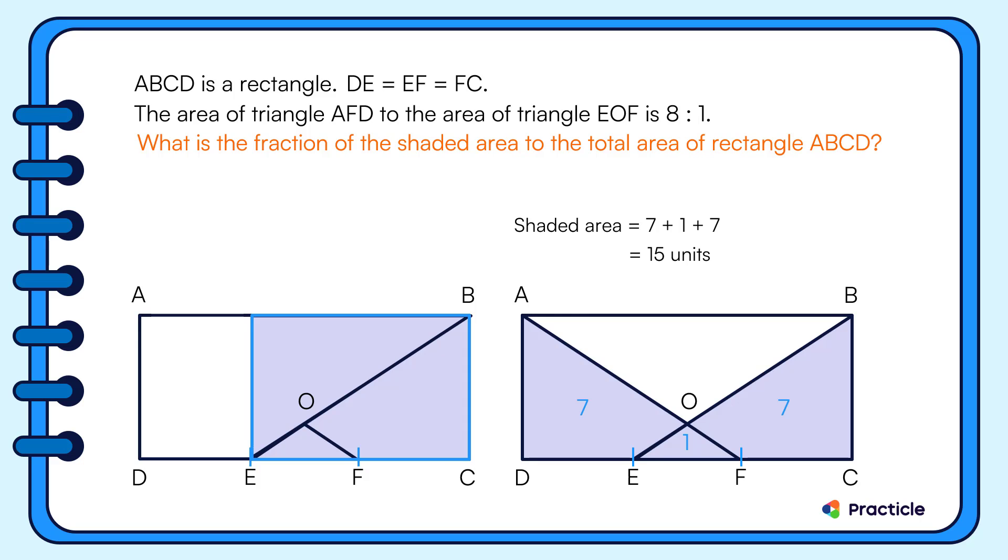Now what can we tell? We know that 2 third of the rectangle is made up of 8 plus 8, 16 units. So let's make use of that to find the area of rectangle ABCD.